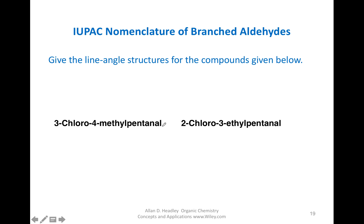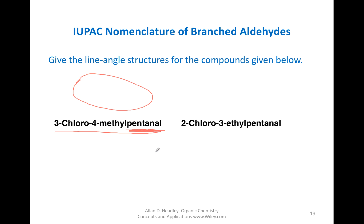Here is a little exercise: give the line-angle structure for the compounds. We need to be able to go from names to structures and from structures to names. My suggestion is to start at the end, put five carbons in a row, number those five carbons, and on the first carbon put your aldehyde. Then on carbon 4 and carbon 3, place the substituents. For the second example, it's also five carbons with an AL, so put the carbon-oxygen double bond and an H on carbon 1, then place substituents on carbons 3 and 2.